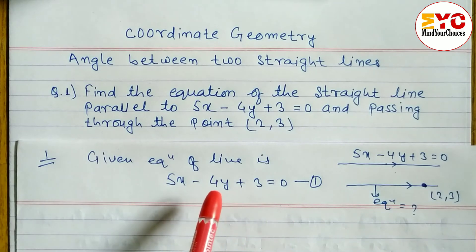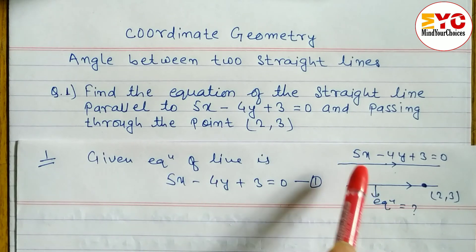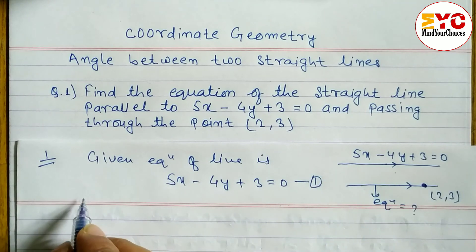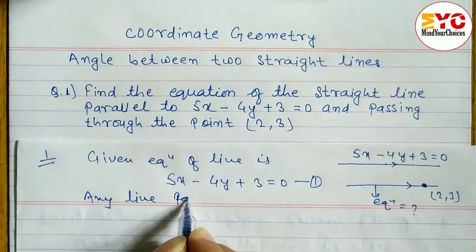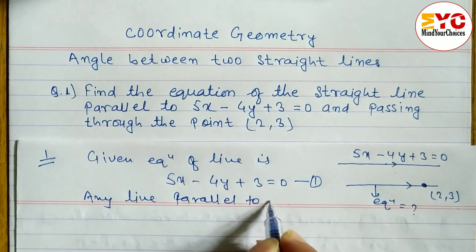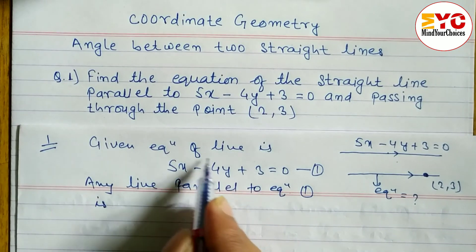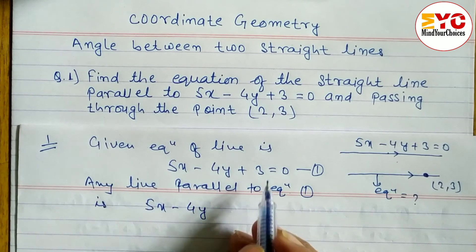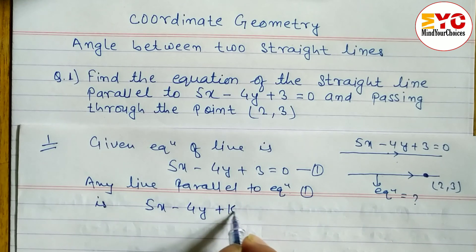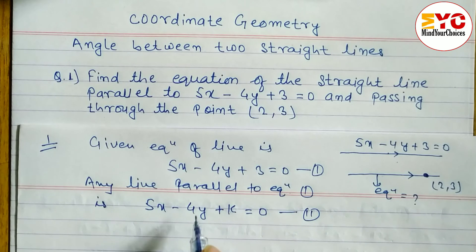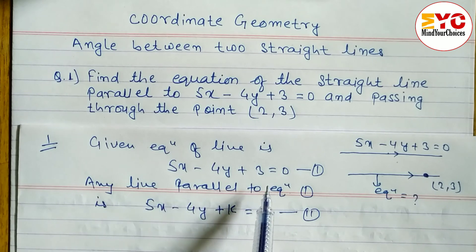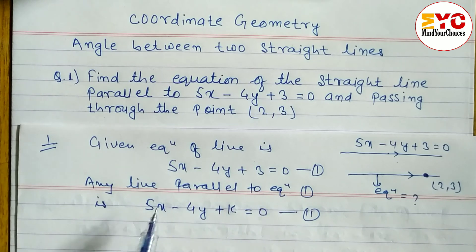We have two methods to do this. Either you can directly write any line parallel to this line, or first find out the slope and use the fact that the slopes are equal. Any line parallel to equation one is written as: we keep the same terms 5x minus 4y, and just replace the constant with k, giving 5x minus 4y plus k equals zero — this is equation two. I already provided this formula in part one.